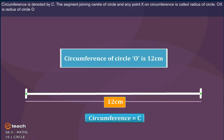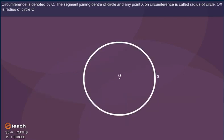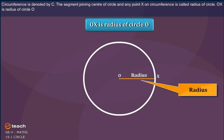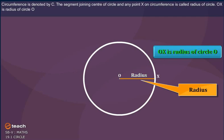Circumference is denoted by C. The segment joining center of circle and any point X on circumference is called radius of circle. O, X is radius of circle O.